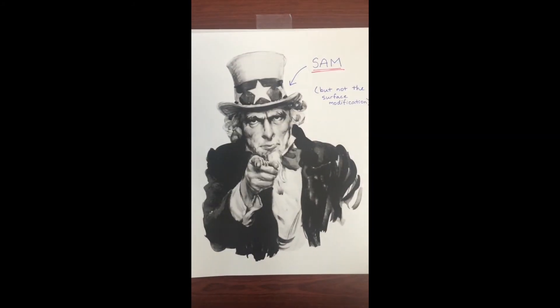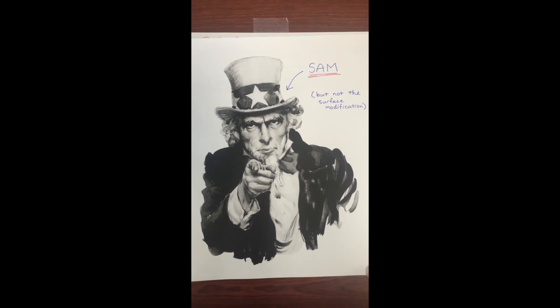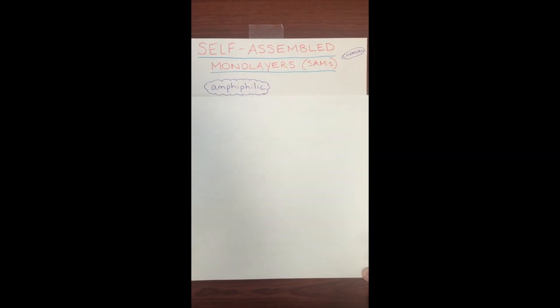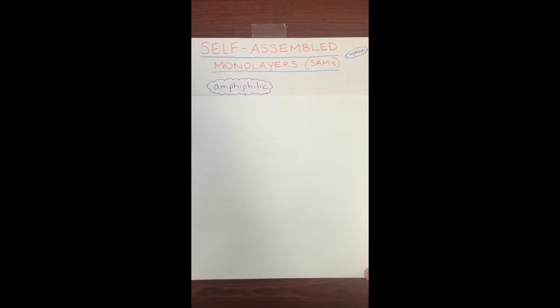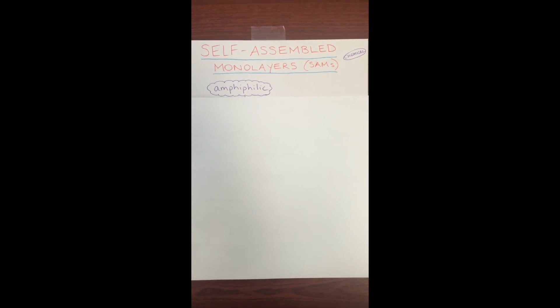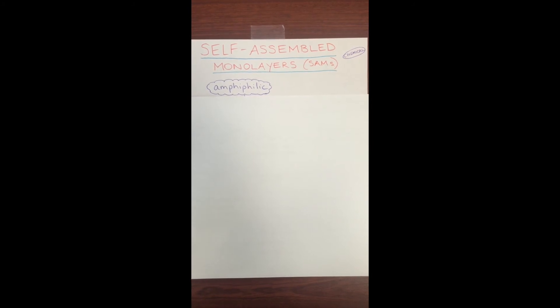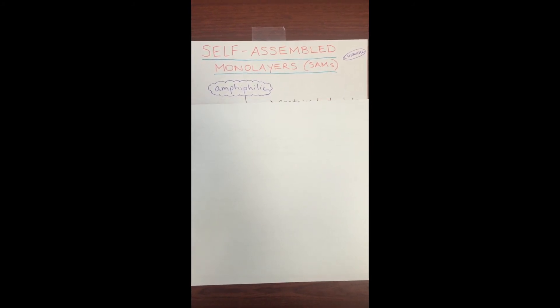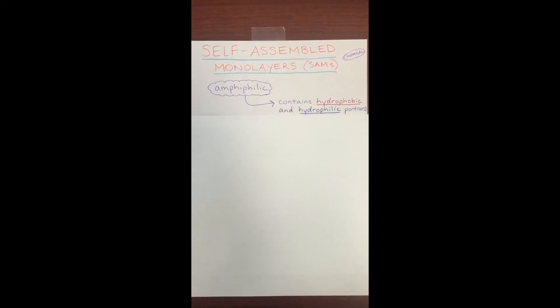Now let's talk about SAMs. No! Golly gee whiz! Not that SAM! SAMs are self-assembled monolayers and are the second chemical modification that we will be discussing. SAMs are amphiphilic. Amph-what? Amphiphilic. They contain hydrophobic and hydrophilic portions. It's like magic!